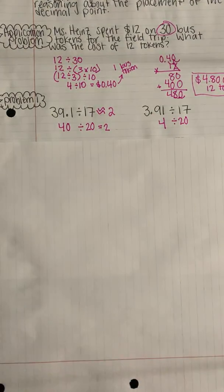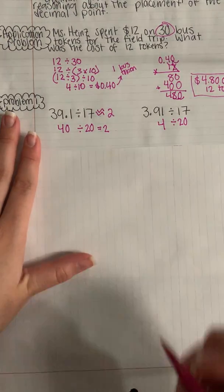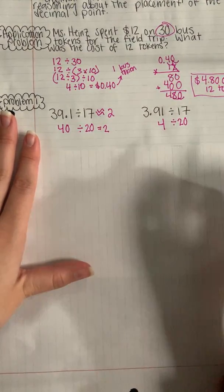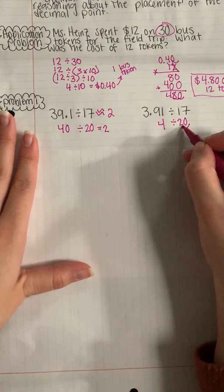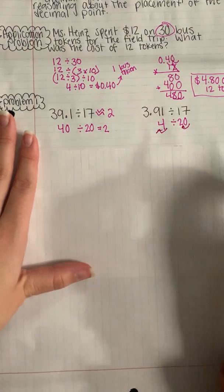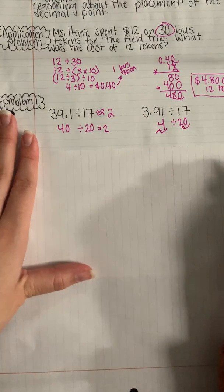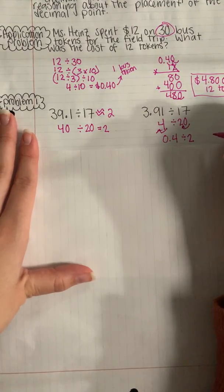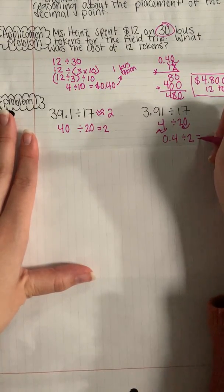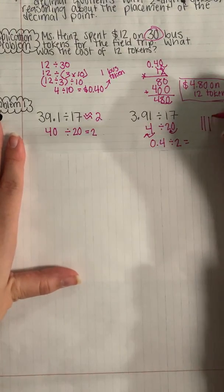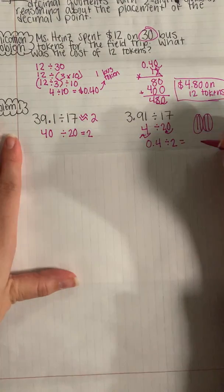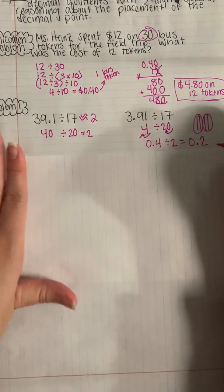So this problem would be like doing 4 divided by 20. Think if you had $4 and you broke it up into 20 groups. You could also think of this problem by moving the decimal points in for each of these, so I could move the decimal point in here and here. And so now this problem would be like I'm doing 4 tenths divided by 2. And I know if I took 4 tenths, 1, 2, 3, 4, and I divided them into 2 groups, I would have 2 in each group, so 2 tenths would be our answer.